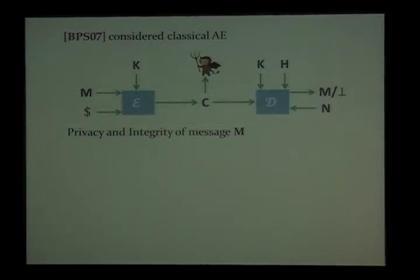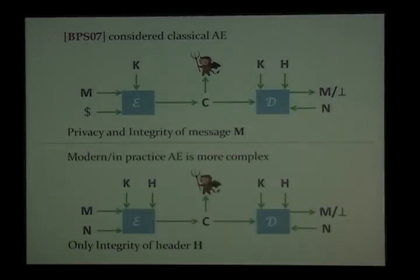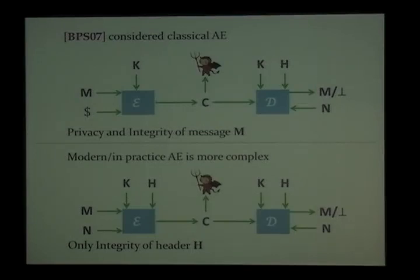Let's first take a look at authenticated encryption — standard authenticated encryption with no KDM. Unlike CPA, authenticated encryption not only guarantees the privacy of the message but also its integrity. In classical AE, the encryption scheme takes in a key, a message, and a random IV. In practice, authenticated encryption schemes are more complex: they also have to deal with associated data in the form of a header. The scheme has to guarantee only the integrity of this header, not its privacy. Another change is that in modern schemes there is no random IV; instead there is a nonce provided as input. This nonce does not have to be random.